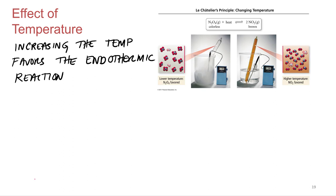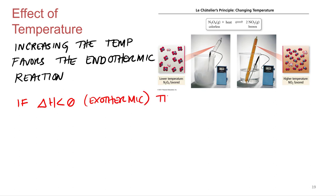Once we know the enthalpy, one of the ways to figure out how temperature is going to affect the system is to think of heat as either a reactant or product based on its enthalpy. If the enthalpy is negative, that's an exothermic reaction, and you think of heat as a product.